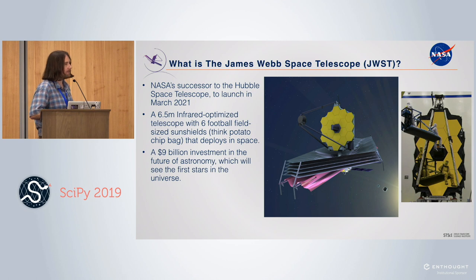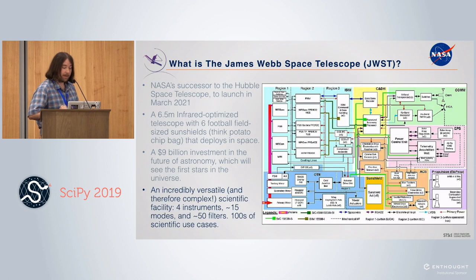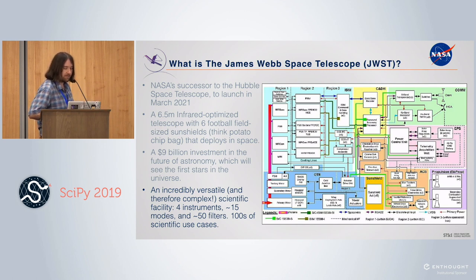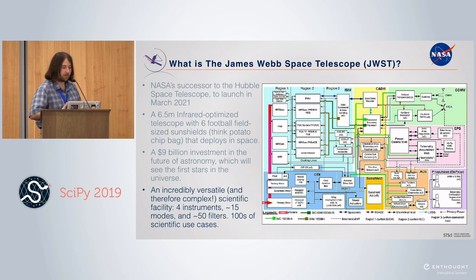It's basically a football-field-sized bag of potato chips launched into space on a rocket that then has to align itself to nanometer-level accuracy once it's gone deep into space. That's why it's such a large and expensive project, but as a result it's an incredibly versatile instrument — with four scientific instruments, 15 different modes, 50 filters, and hundreds of documented scientific use cases.